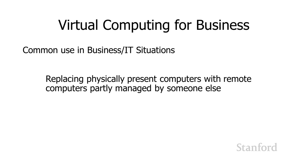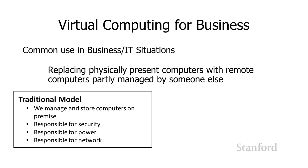Under the traditional model, we manage and store our own computers on our own premises. We're responsible for security, for providing power to them, and for controlling the network — both within those computers, interconnecting those computers, and connecting us to the wider internet.